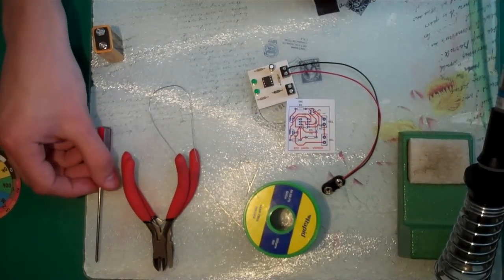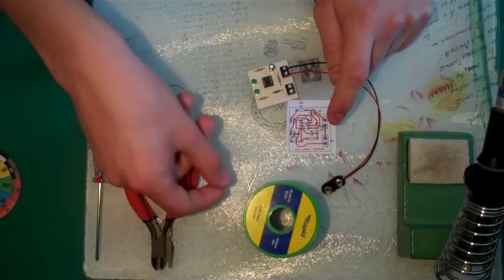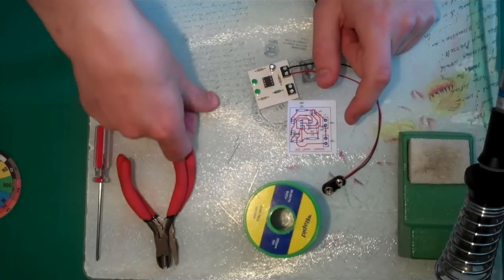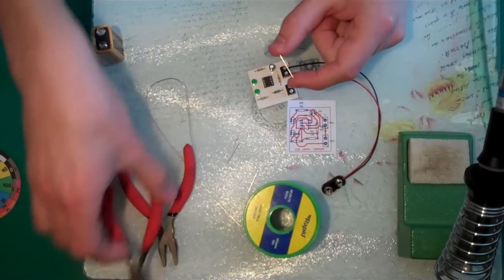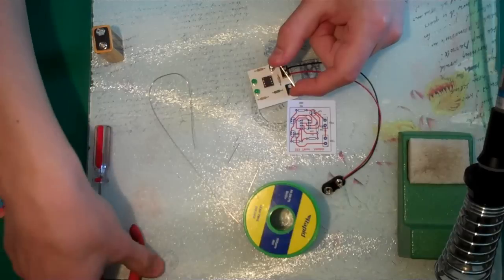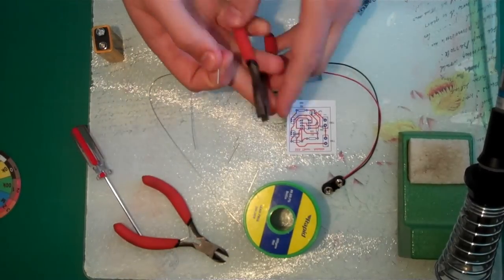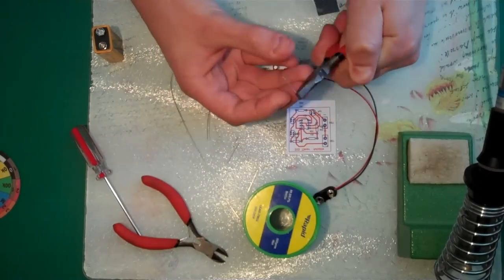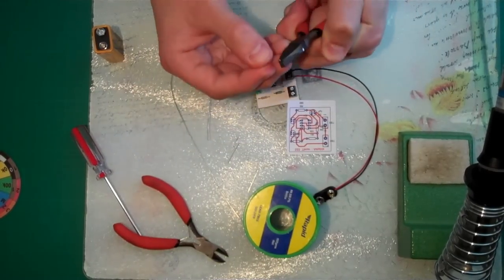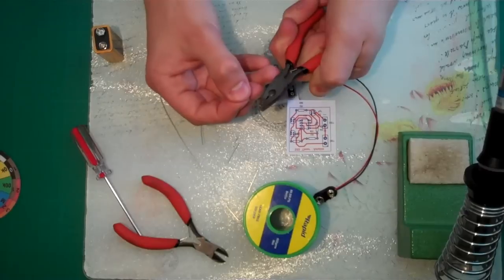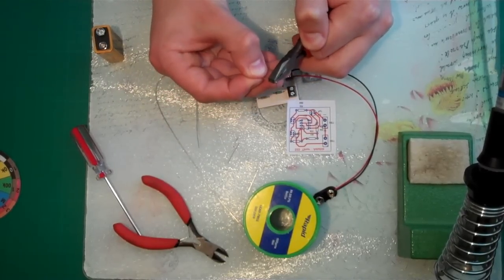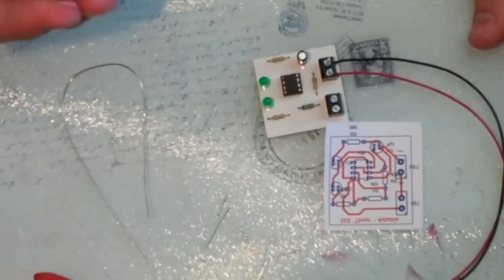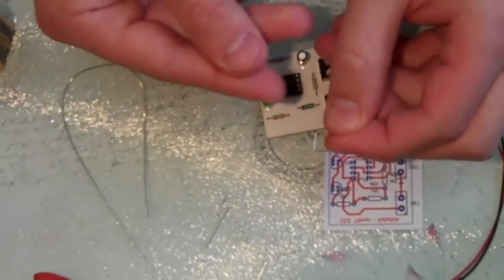And then we need to put the switch in. For this I'm just going to get an old component leg. I'm going to put them in a pair of pliers, bend it around at 90 degrees, and then the same just here. Make a little U shape.